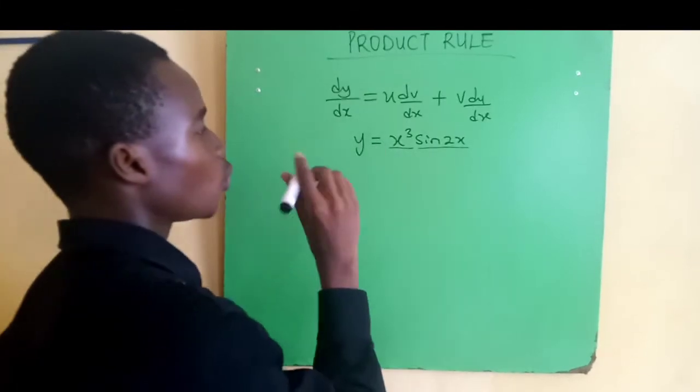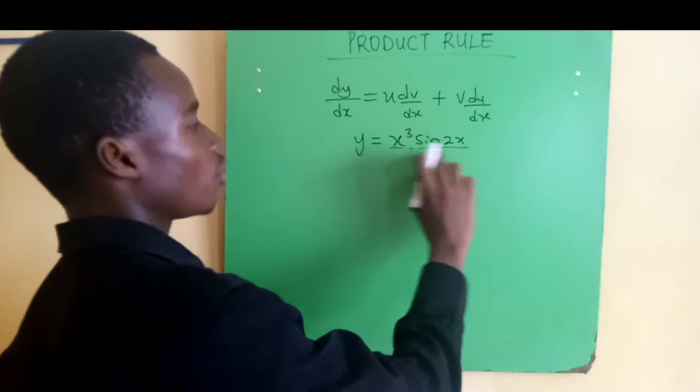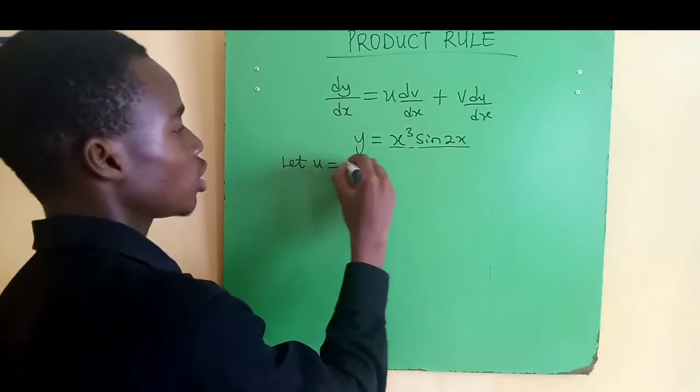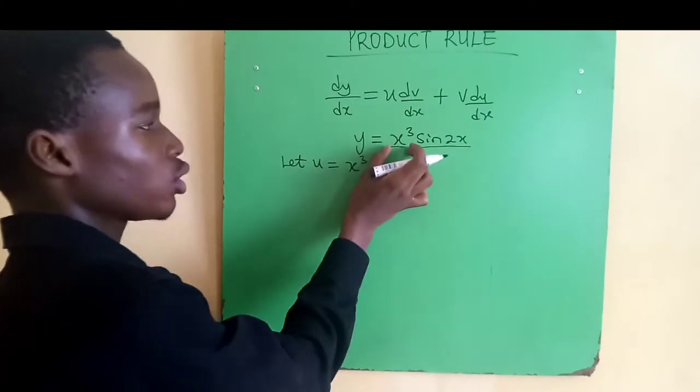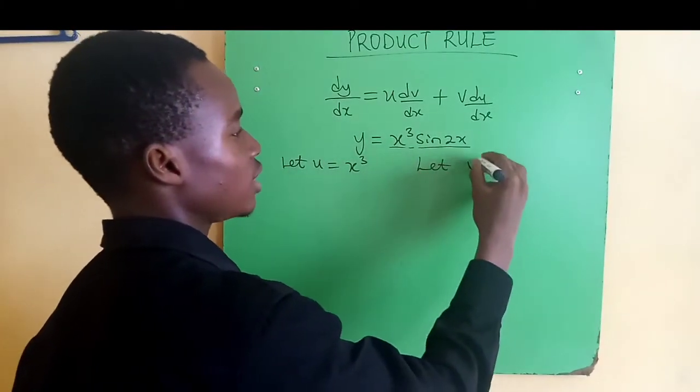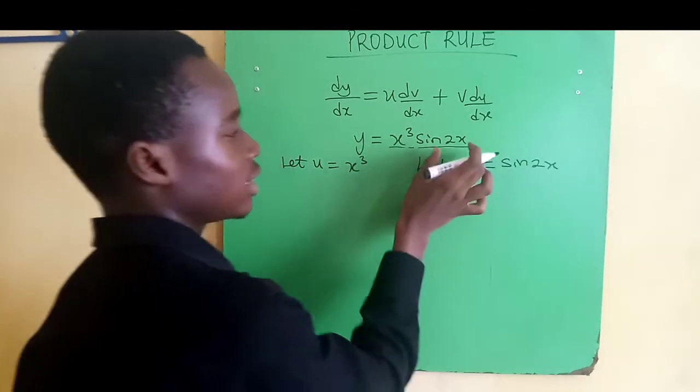The first thing we need to do is to assign variables for each of our product. So we say let u equal x cubed, that's the first one, and let v equal sine 2x, that's the second one.